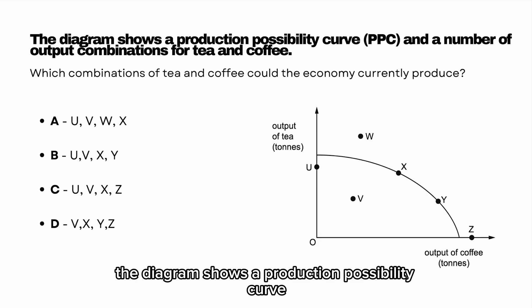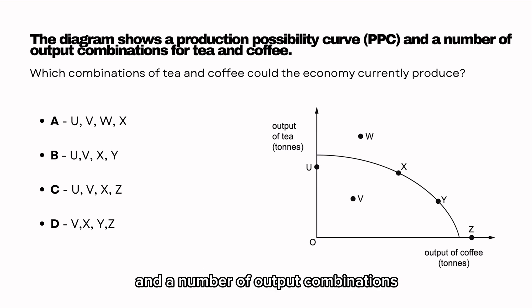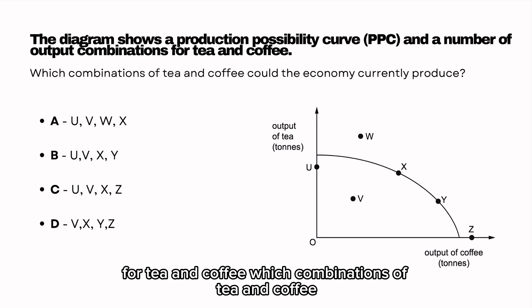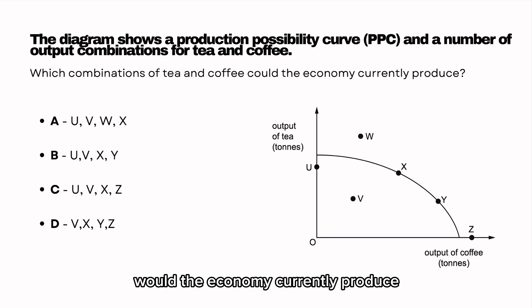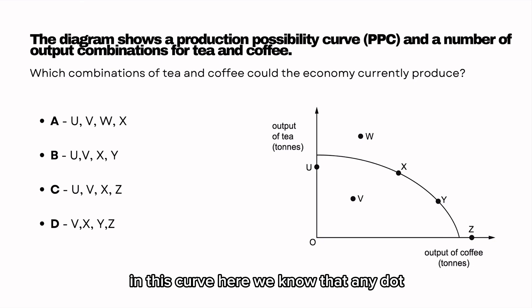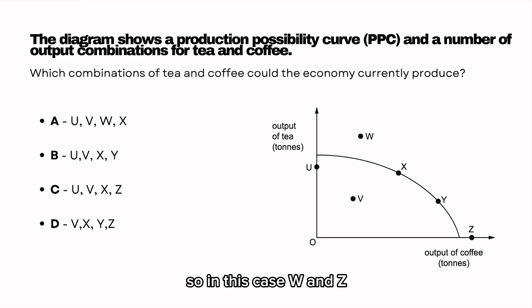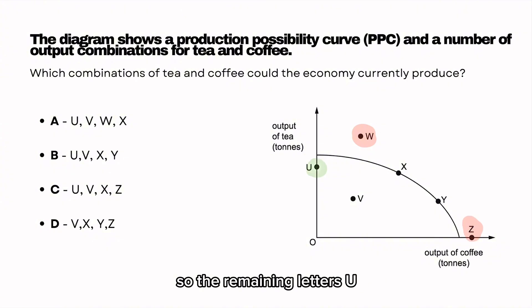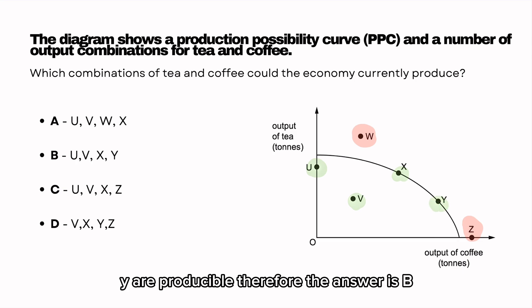The diagram shows a production possibility curve and a number of output combinations for tea and coffee. Which combinations of tea and coffee would the economy currently produce? In this curve we know that any dot outside of the curve is unproducible — in this case W and Z. So the remaining letters U, V, X, Y are producible. Therefore the answer is B.